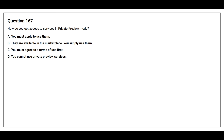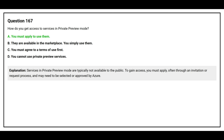Question number 167. How do you get access to services in private preview mode? Option A: You must apply to use them. Option B: They are available in the marketplace — you simply use them. Option C: You must agree to terms of use first. Option D: You cannot use private preview services. The correct answer is Option A. Services in private preview mode are not available to the public; to gain access you must apply, often through an invitation or request process, and may need to be approved by Azure.